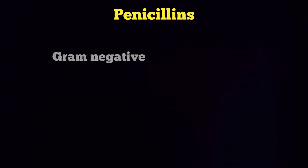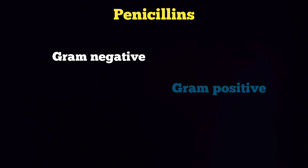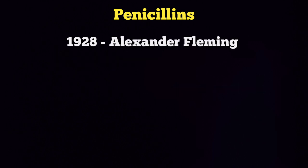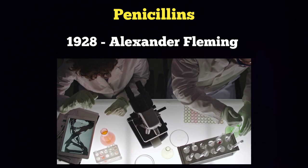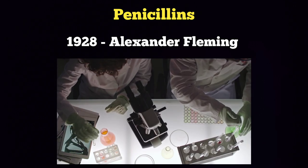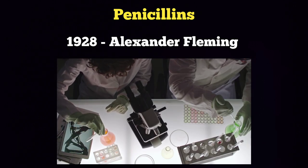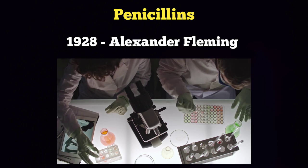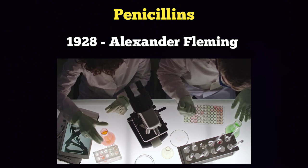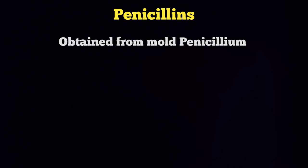That means gram negative and gram positive activity. If you look at penicillin history, in 1928, Alexander Fleming accidentally discovered that penicillin is an antibiotic. Penicillin is a type of mold, and the mold is called Penicillium.